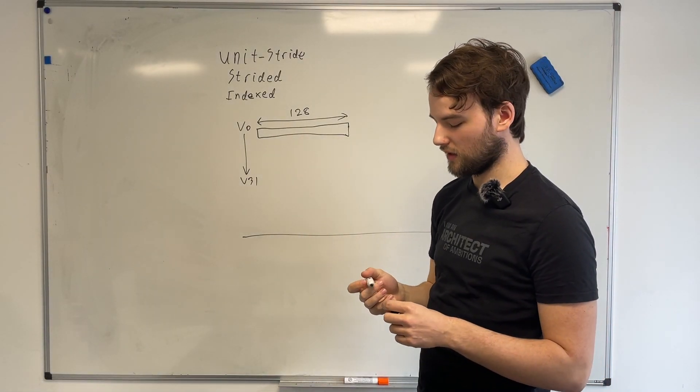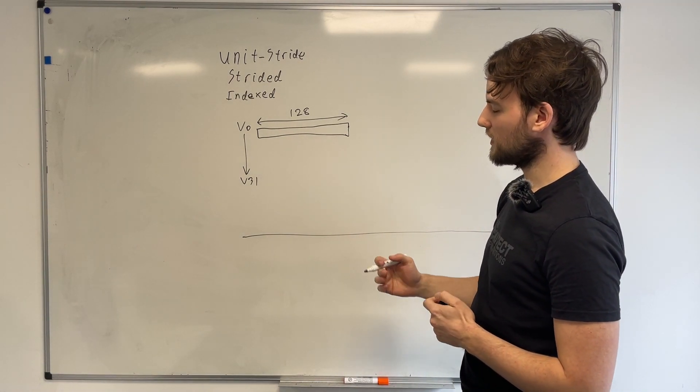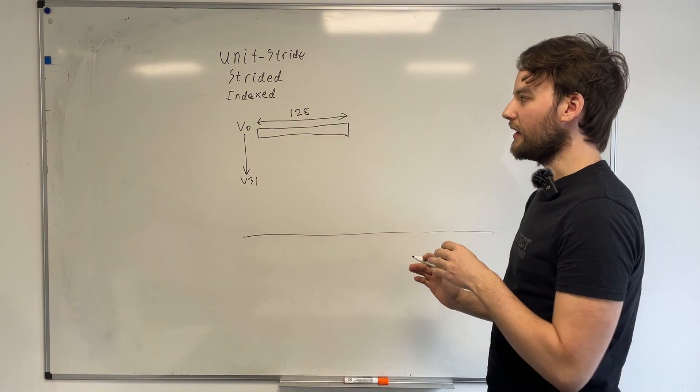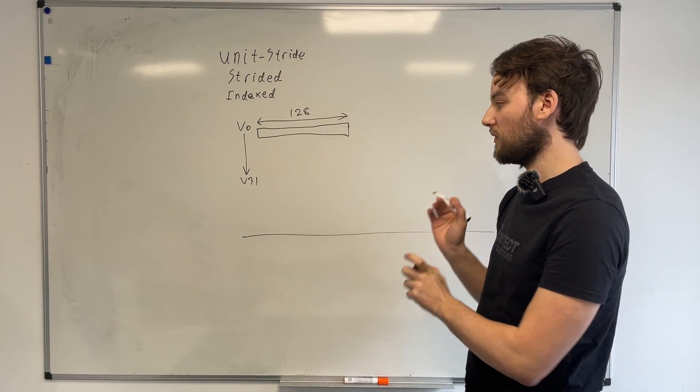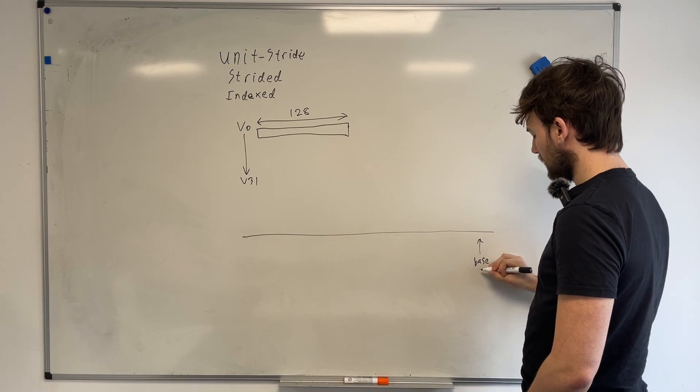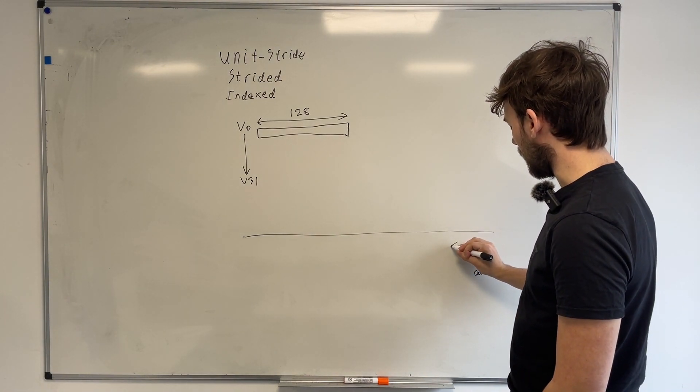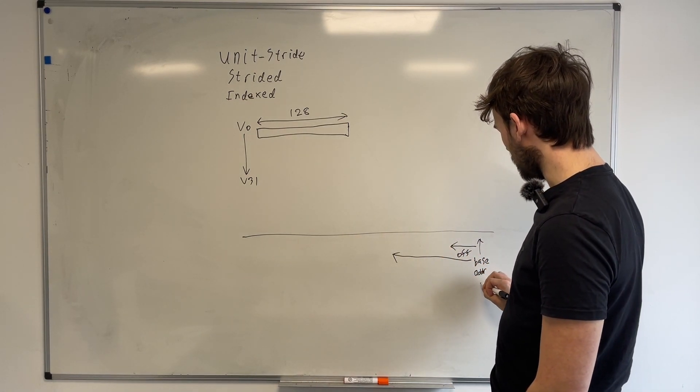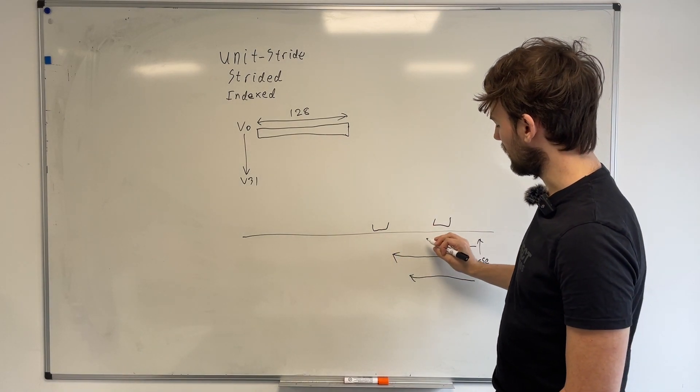The indexed case is another generalization on the loads and stores. So instead of unit stride, where everything's back to back, or instead of strided, where there's a fixed distance between each element, indexed, instead of taking a stride, takes a second vector register that includes an offset for each individual element. And what that allows you to do is, as before, you have a base address, but each element can have its own individual offset. And these can be in any order and any arbitrary value, so you have an element there, an element there, an element there.